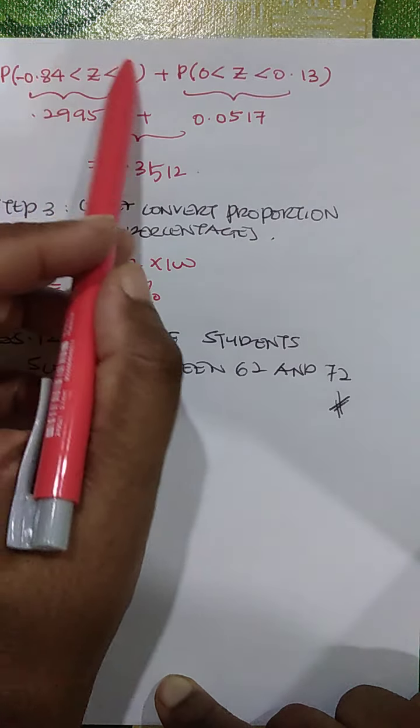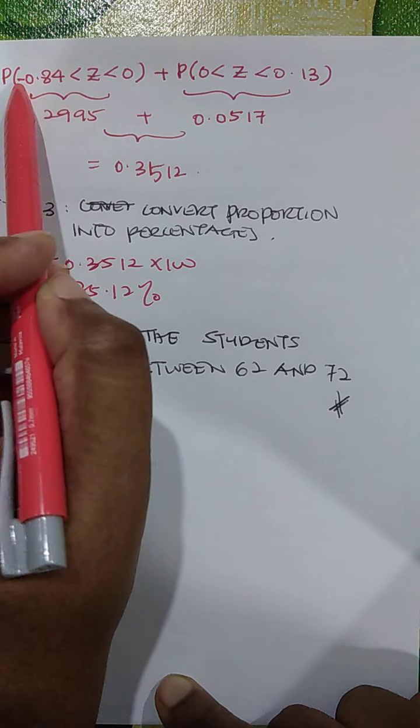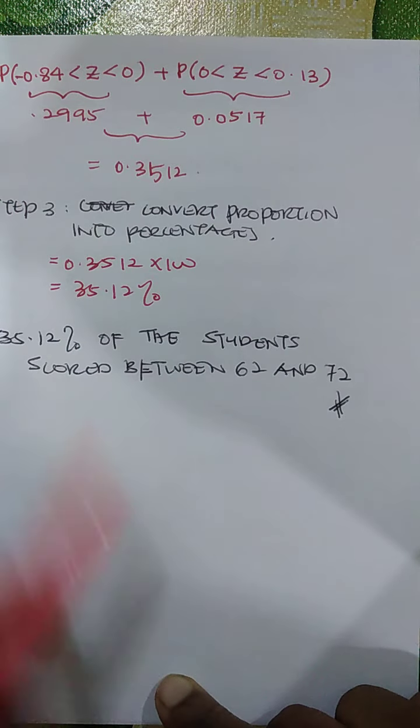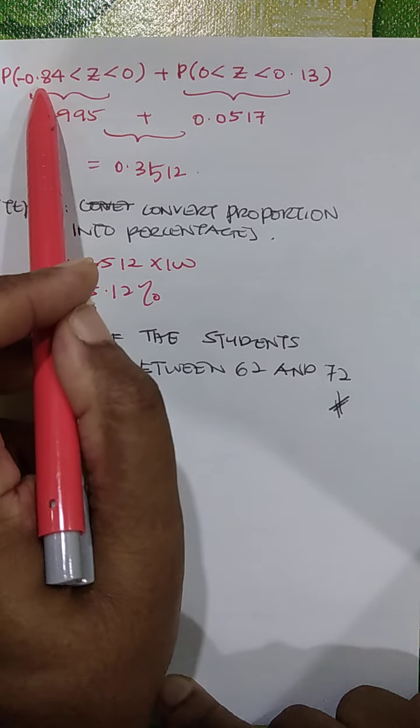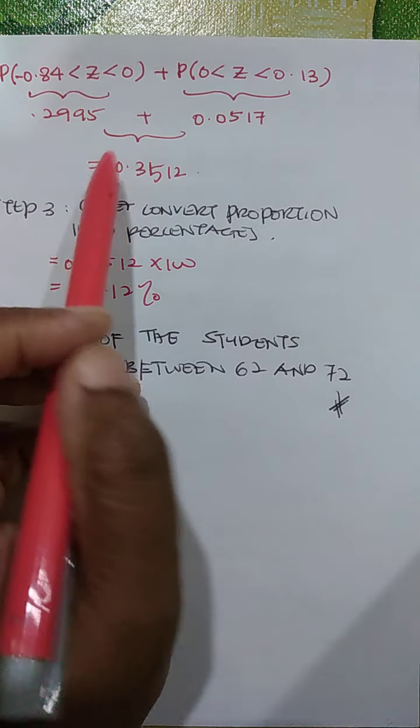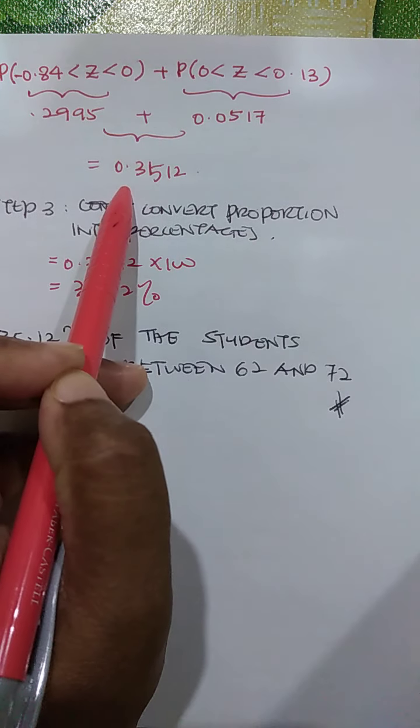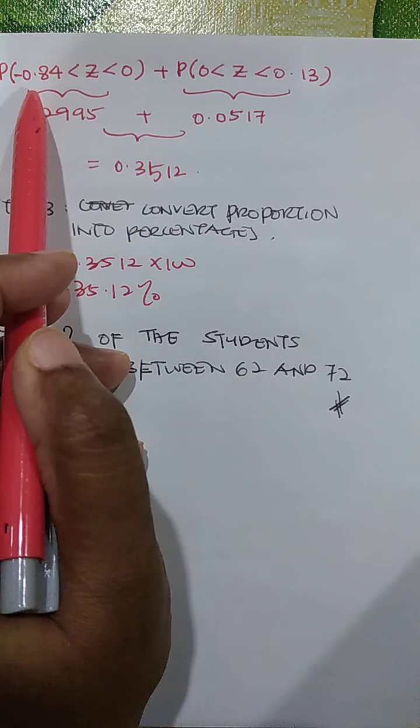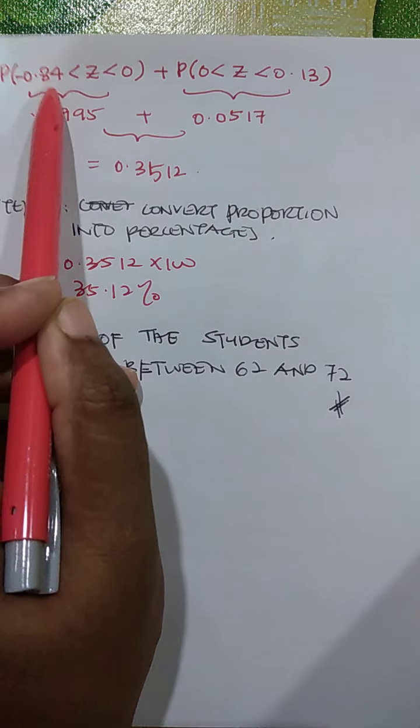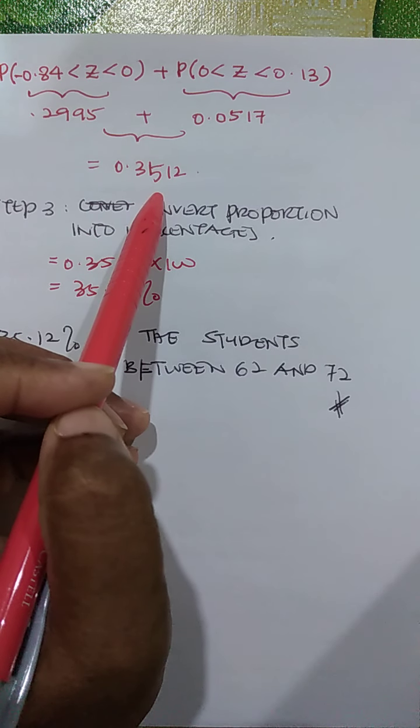So when you are finding the area, you can ignore the sign, you can ignore the negative values because they are symmetrical. So there is no negative values on the table because it carries the same meaning with the positive. So when you add these two areas, you get 0.3512. The proportion of this range between negative 0.84 and 0.13 is 0.3512.